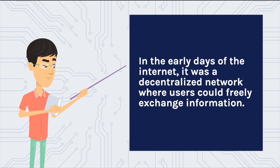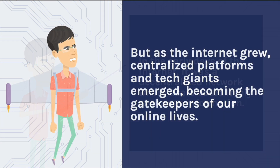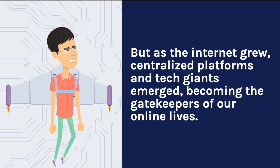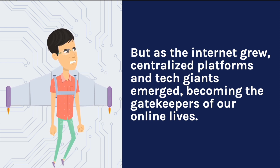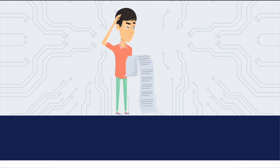In the early days of the internet, it was a decentralized network where users could freely exchange information. But as the internet grew, centralized platforms and tech giants emerged, becoming the gatekeepers of our online lives. This has led to numerous issues around data privacy, the spread of misinformation, and the control of our online identities.